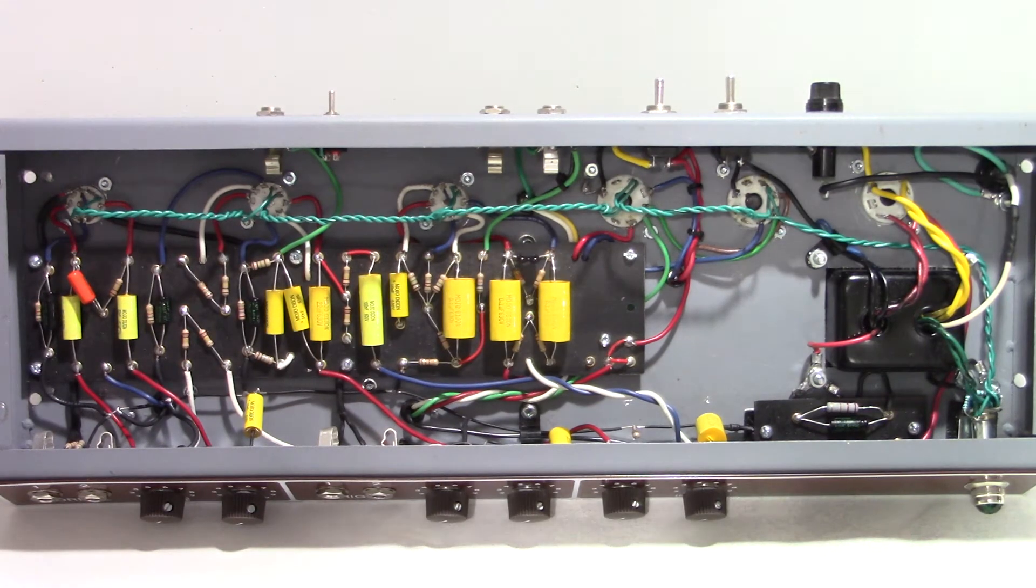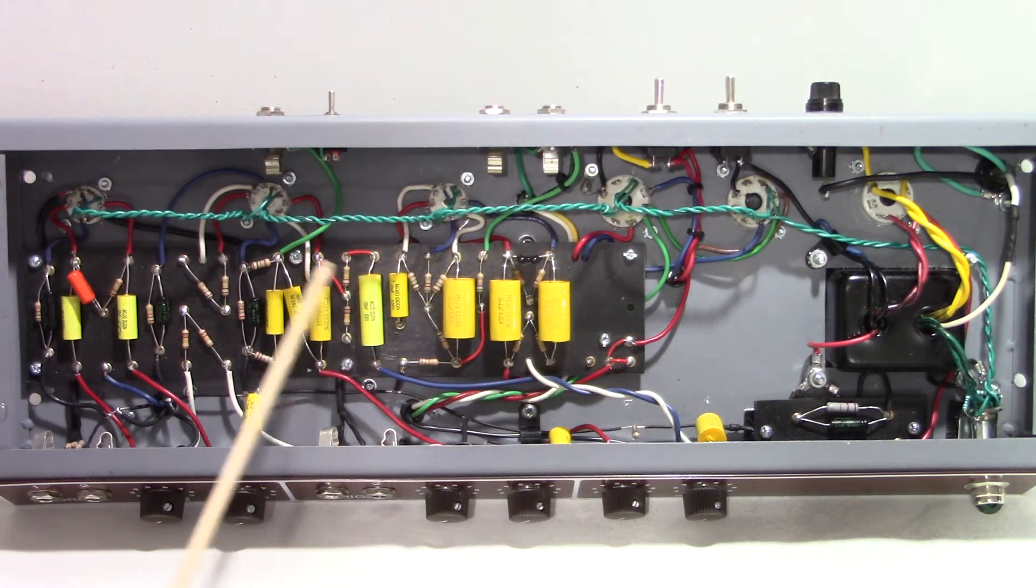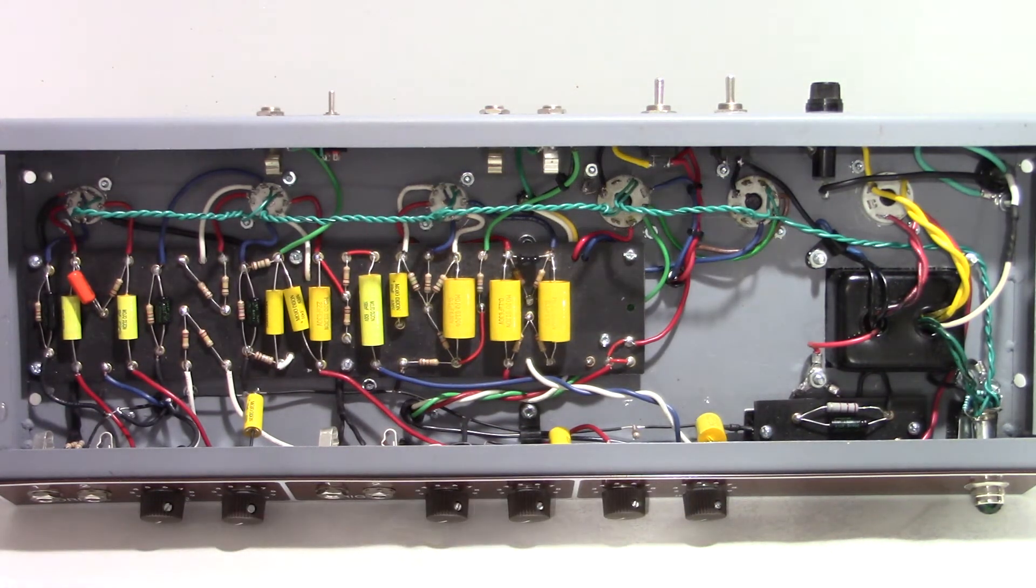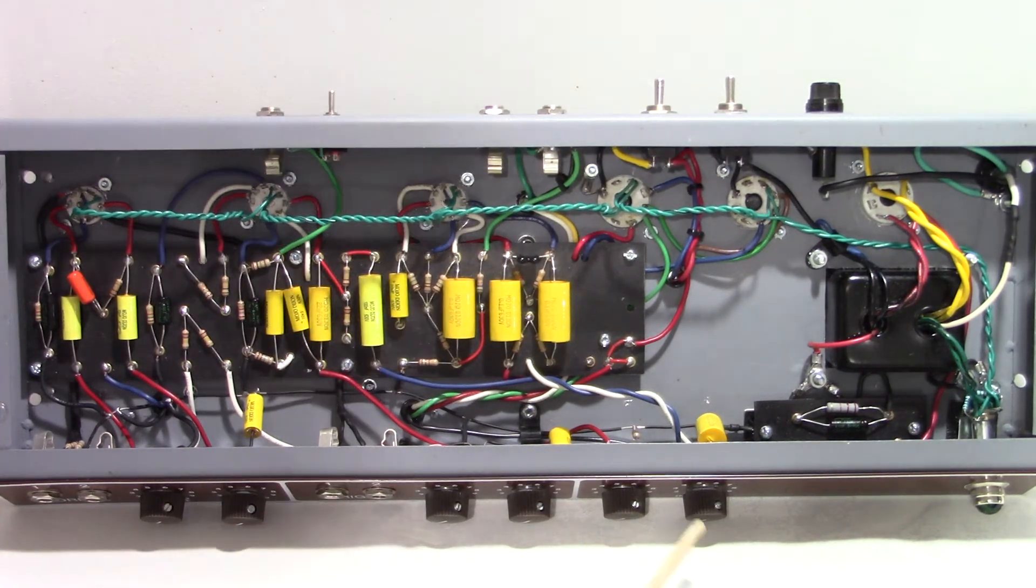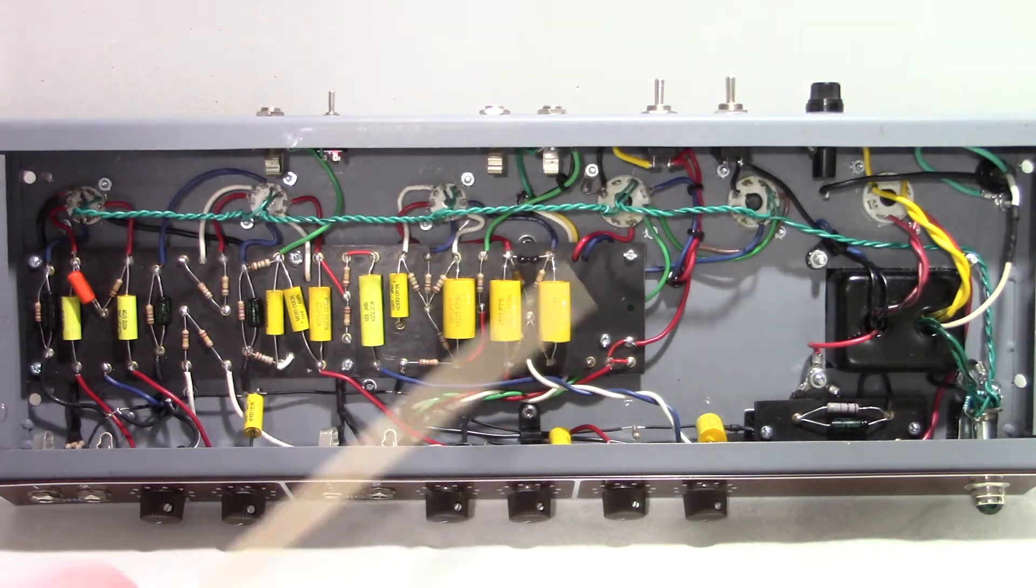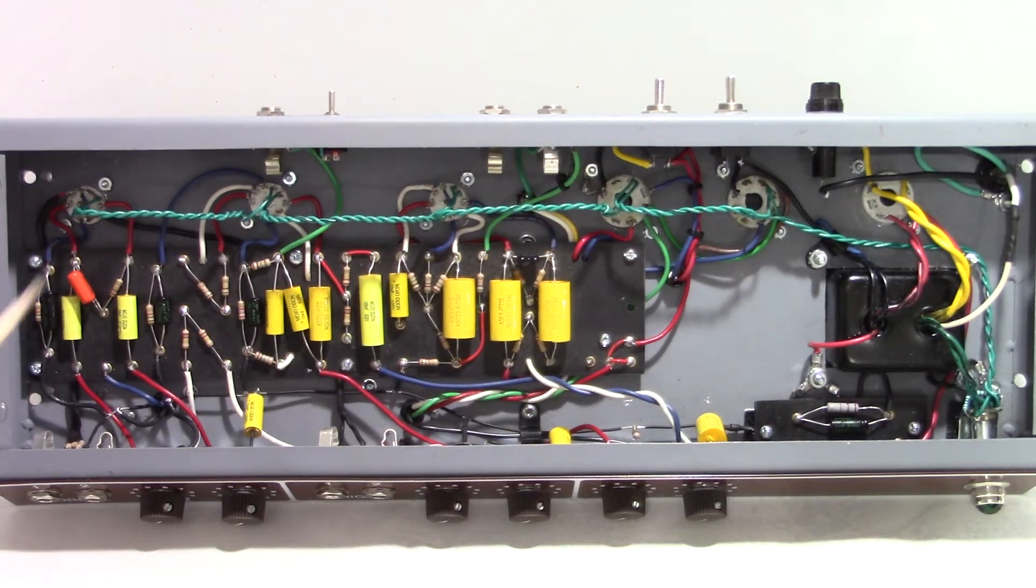What else to say? Oh, I should say something about the tremolo circuit in this amplifier. This is a bias-based tremolo. The controls actually connect directly to the bias board here. It has speed and intensity, just trying to see which is which here, speed and intensity.